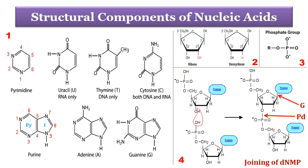Another type of nitrogenous base is purine. The parent compound purine is a nine-membered heterocyclic double-ring structure, of which one ring is a pyrimidine ring and another is an imidazole ring. Purine consists of two nitrogen heteroatoms in each ring. Purines are of two types: adenine and guanine. Both are present in DNA and RNA.